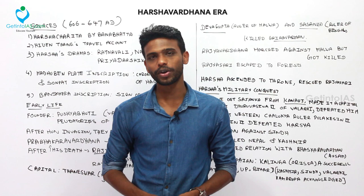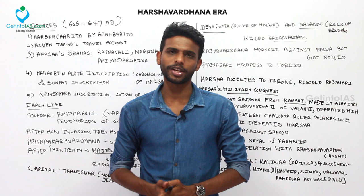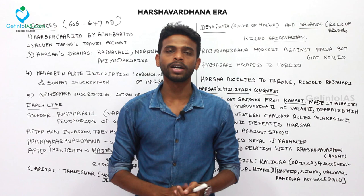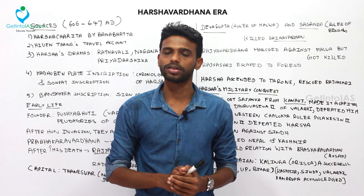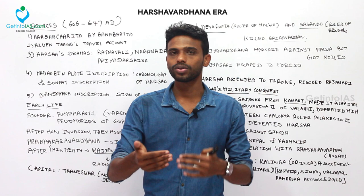Harsha Vardhana's period was from 606 to 647 AD. In the previous chapter we learned about the Gupta Empire. The Gupta Empire started to decline after the Hun invasion. The Huns were people from Central Asia. After the invasion, there were some feudatories of the Guptas — kingdoms under their control — and among those was the Harsha dynasty.